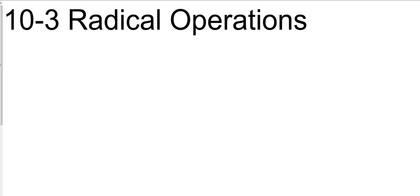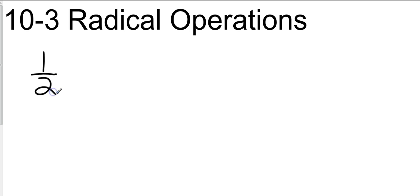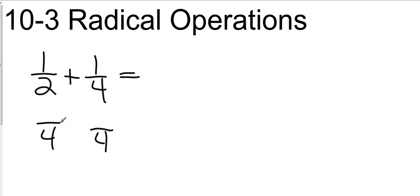These have the same rules as fractions. For example, if I'm going to add 1 half and 1 fourth, what do I have to do before I can do any addition? Common denominators. So the common denominator of this is going to be four. 1 half is how many fourths? Two fourths. And so my answer is three fourths.